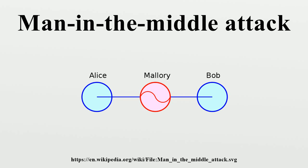Implementations: Notable man-in-the-middle attack implementations include the following — DSNIFF, the first public implementation of MITM attacks against SSL and SSH; Fiddler, an HTTP diagnostic tool; NSA impersonation of Google; OpenDPI/CNI content control software, used to perform inspection of HTTPS traffic at the gateway; and Subterfuge, a framework to launch multiple MITM attacks.